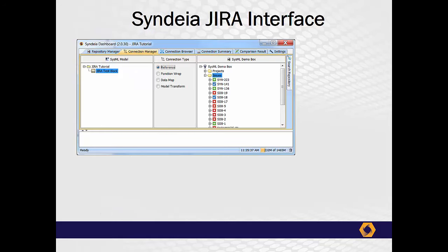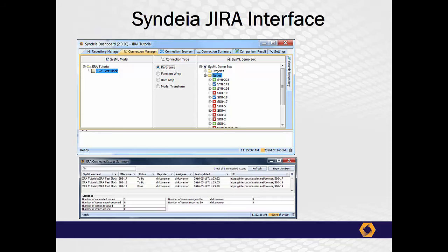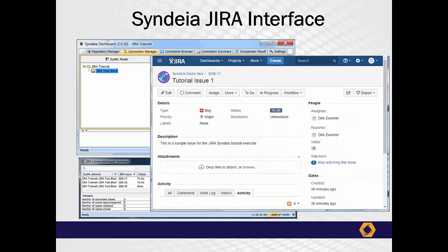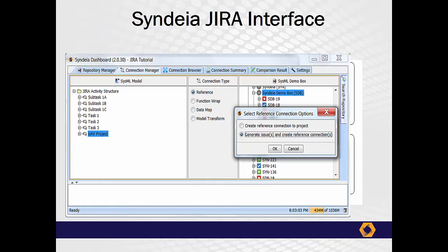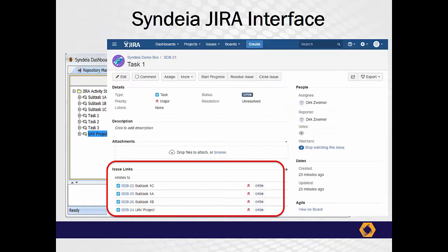Cyndia's third new interface may be the biggest leap — from systems engineering to project management. Jira is an online issue tracking system. From any element in a SysML model, we can access its Jira issue or issues, checking status, personnel assigned, or scheduled completion date. In one step, a work breakdown structure in SysML can generate a corresponding issue structure in Jira, keeping project management data at the system engineer's fingertips.